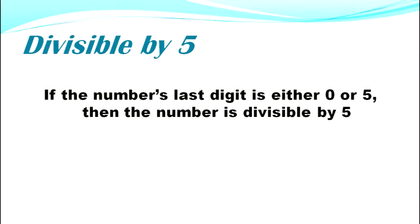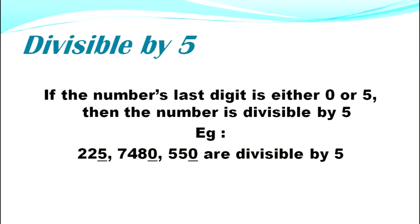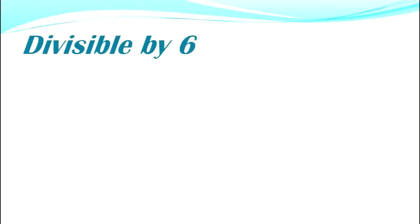Divisible by five: if the number's last digit is either 0 or 5, then the number is divisible by five. Example: 225, 7480, and 550 are divisible by five.